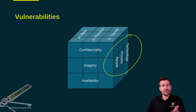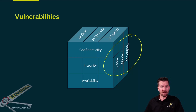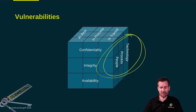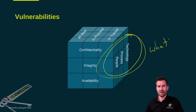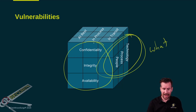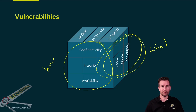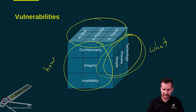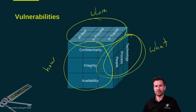The cybersecurity cube really applies to vulnerabilities. People, processes, and technology is the 'what is vulnerable.' Confidentiality, integrity, and availability is 'how it's vulnerable.' And then at rest, in process, and in transit is 'where it's vulnerable.'